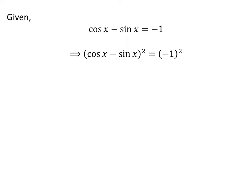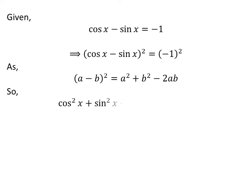Squaring both sides of the above equation gives us: square of (cosine of x minus sine of x) is equal to square of minus 1. As we know, square of (a minus b) is equal to square of a plus square of b minus 2 times a times b. Applying this formula gives us: square of cosine of x plus square of sine of x minus 2 times cosine of x times sine of x is equal to 1.